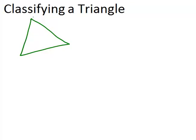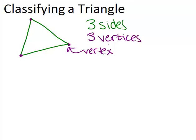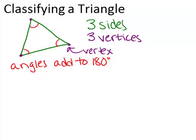So this would be one example of a triangle. Triangles have three sides. They also have three vertices. Each of these points, that is where the sides meet, is called a vertex. And all together, the shape of the triangle has three vertices. The word vertices is the plural of the word vertex. Another thing you should know is that the three angles in a triangle add to 180 degrees. For right now, you should just know that the angles have to add up to 180 degrees.